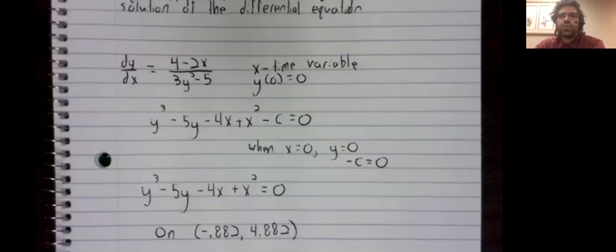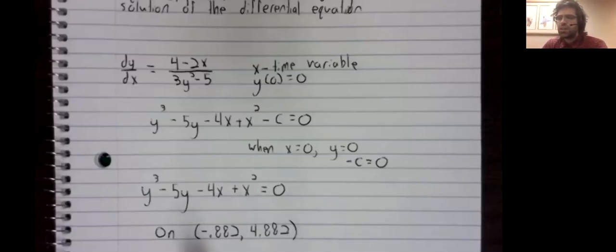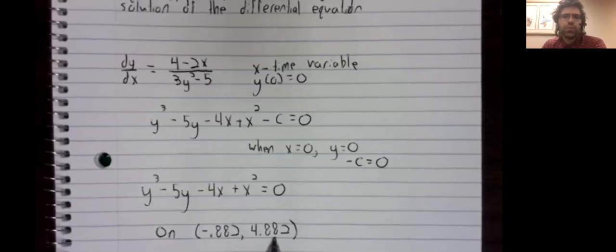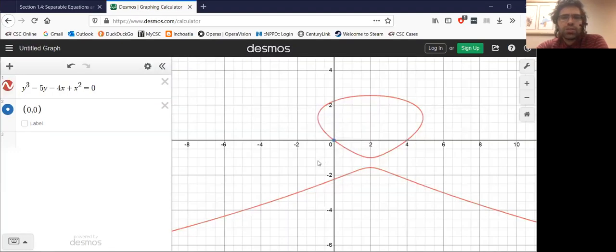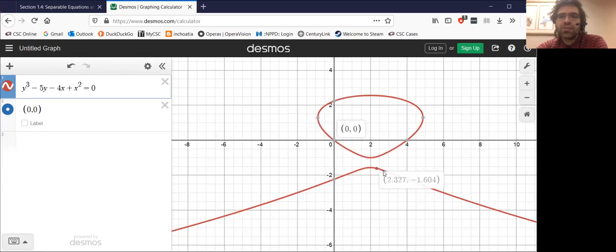So remember when I've talked about solutions existing on intervals. The solution we were just looking at is only a solution on an interval. So we generated that entire graph, but the majority of this graph is actually unrelated to the differential equation.